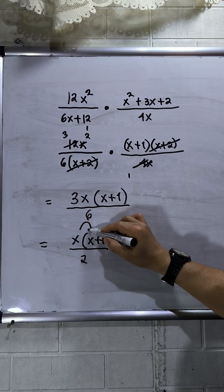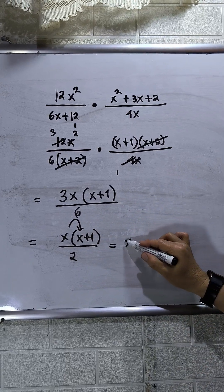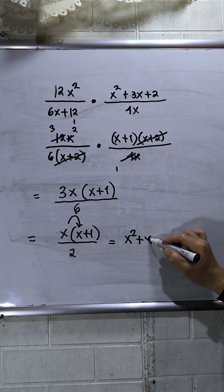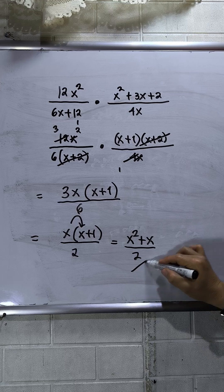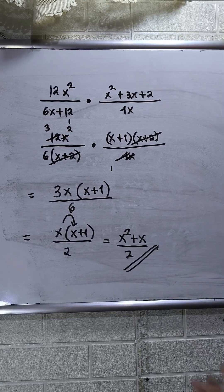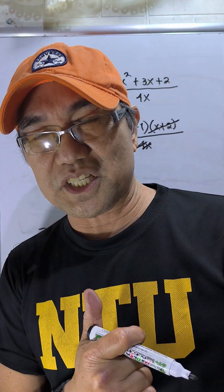Then multiply inside the brackets. This will be x squared plus x over 2. So this is now my final answer, and that's all. Thanks for watching.